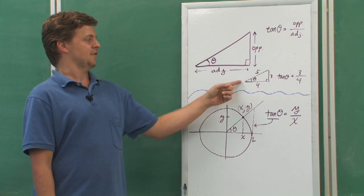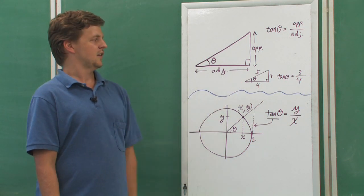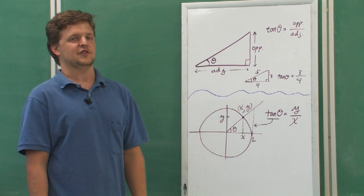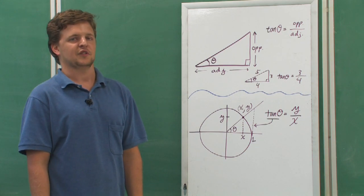For an example, if my right triangle has three sides of length 3, 4, and 5, and this angle theta is shown, then tangent of theta uses the 3 and the 4. It's the ratio of 3 fourths.